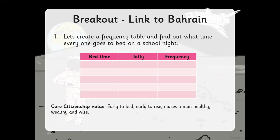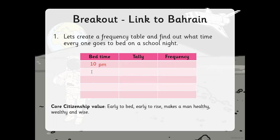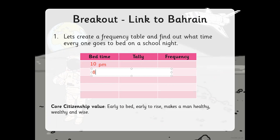Here I have a table showing bedtimes. You need to create a frequency table to find out what time everyone goes to bed on a school night. Since you are at home, create a table using your family members. For example, write your mom's bedtime — let's say she goes to bed at 10pm. If you have a younger sibling, they might go at a different time, like 8pm.